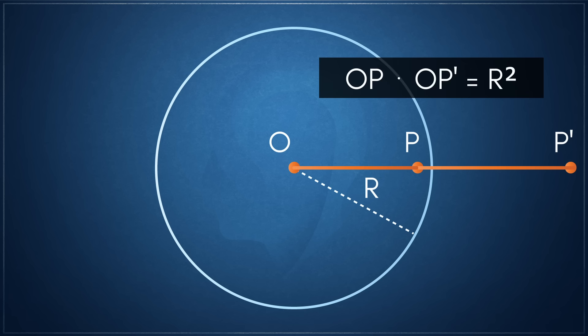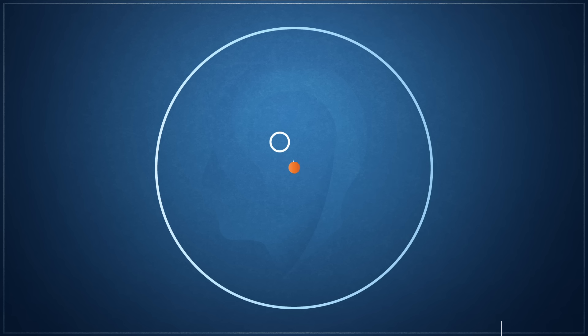Geometric inversion is a transformation that maps points in a plane to other points in the plane with respect to a fixed circle known as the circle of inversion. For example, given a circle of inversion with its center at a point O and a radius of R, for any point P in the plane, its inverse point P' lies on the line that extends from O through P. The product of their distances from the center O is a constant value equal to the radius squared. Inversion has many fascinating properties, but in the context of linkages, if a circle passes through the center of inversion O, its inverse creates a mathematically perfect straight line.